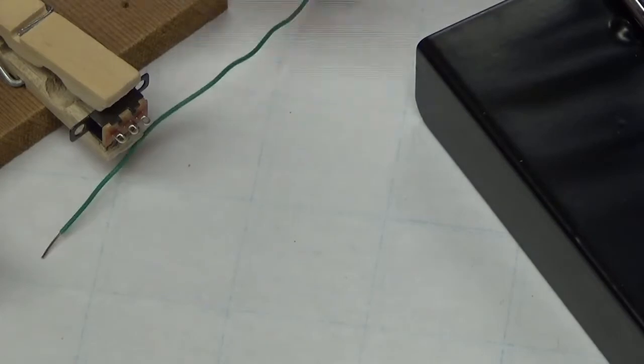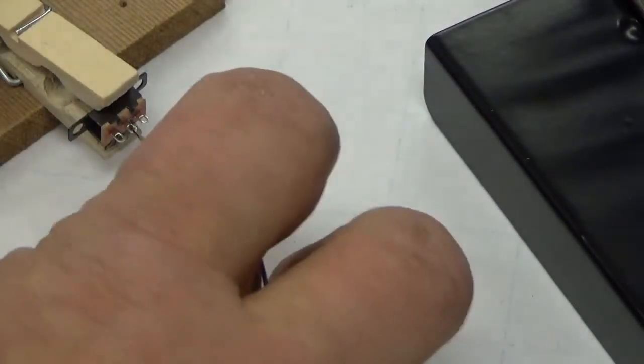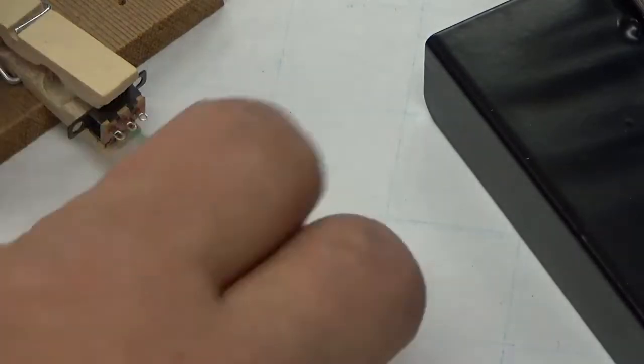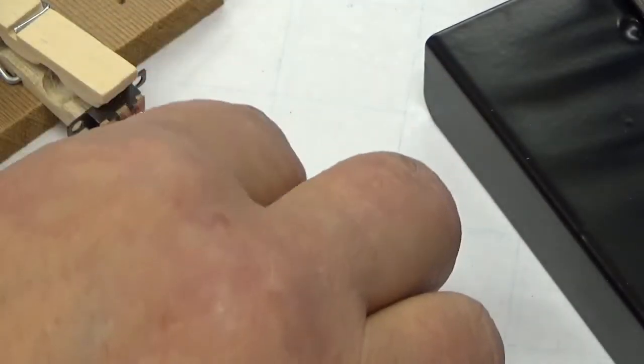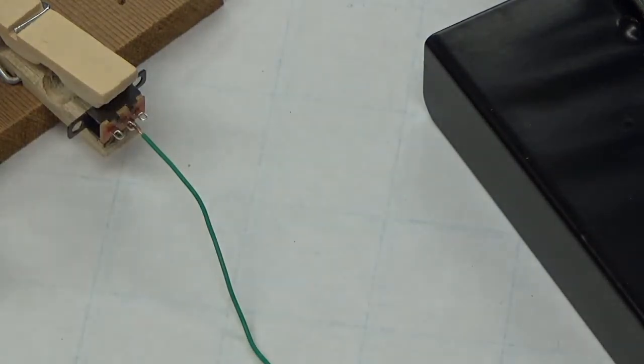We're going to take our wire and put it into the middle one. And I'll explain the switch in a second. Okay. And so there it's just sitting there in the middle one. And I'm going to grab my solder, my solder pencil.